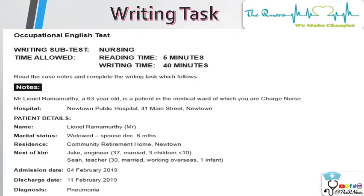The question booklet of the writing task shows that the time is stipulated into two parts: the reading time of five minutes and the writing time of 40 minutes. In those five minutes you will have to read the task very carefully, plan and organize it, and then use the 40 minutes to completely write the task on the answer booklet.